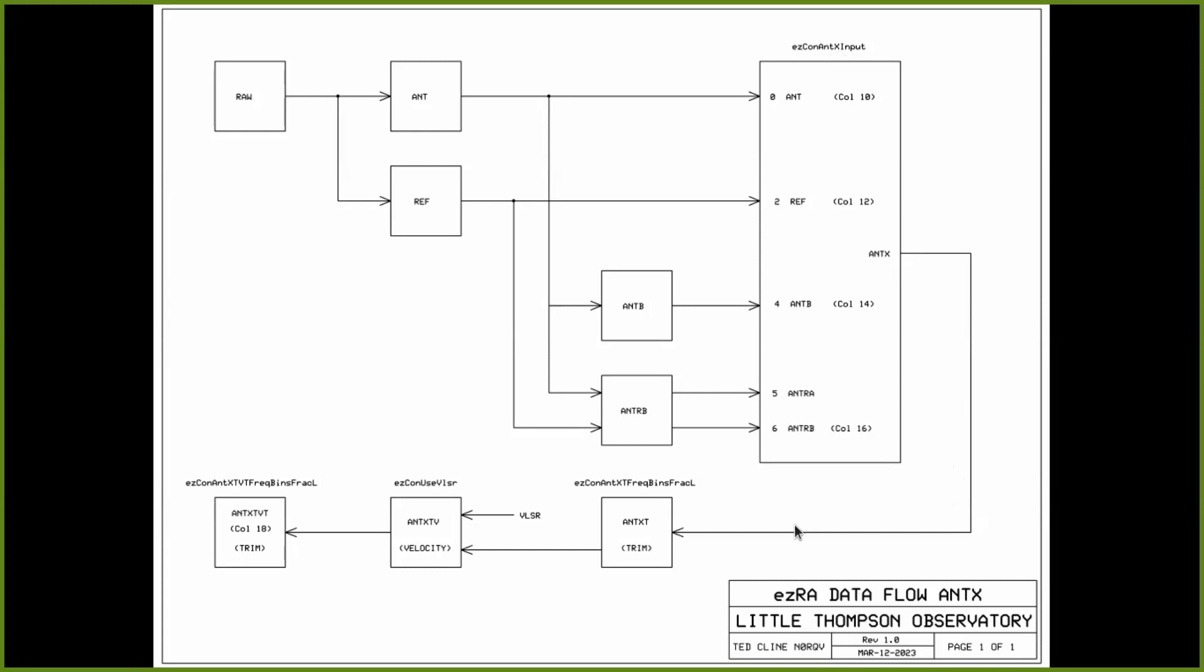It moves on to other processes in the software where it gets trimmed. That adds a T to the end of it, Ant-X-T. Or it gets adjusted for velocity with the value of VLSR. We're about to talk about that. And you can turn it on and off with this keyword up here, EZ-CON-Use VLSR, a zero or a one.